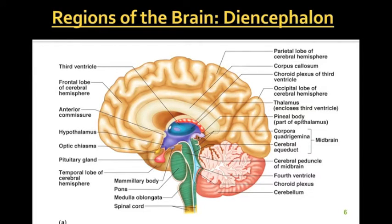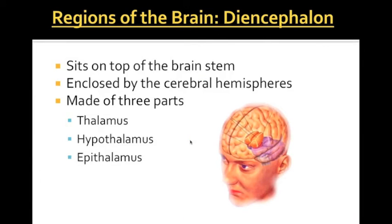Now we look at the very middle section called the diencephalon. The diencephalon is broken down into three main parts: the thalamus, the hypothalamus, and the epithalamus. Using medical terminology, the hypothalamus would be below the thalamus and the epithalamus would be above the thalamus.